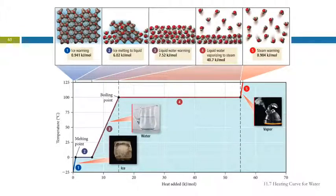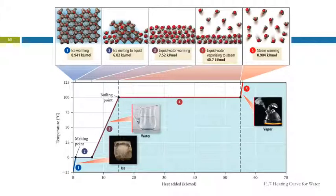This is a heating curve showing the whole business — the melting and the boiling. We're looking at water here, drawn to scale for one mole of water. If we take water at minus 25 degrees Celsius, that is below the freezing point, so that will be ice. If we add heat to the ice, the temperature will increase until it begins to melt. At that point, the temperature will remain zero until all the ice has melted.